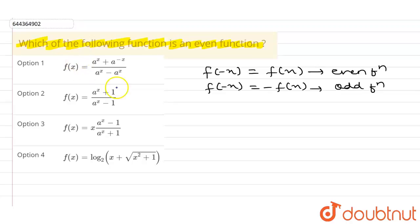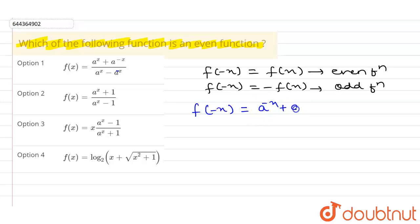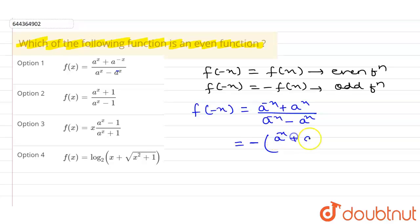Our first option is f(x) = (aˣ + a⁻ˣ) / (aˣ − a⁻ˣ). If I put f(−x) in this function, I can write it as (a⁻ˣ + aˣ) / (a⁻ˣ − aˣ). Taking minus as common, this becomes (aˣ + a⁻ˣ) / (aˣ − a⁻ˣ) with a negative sign outside.